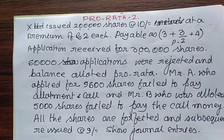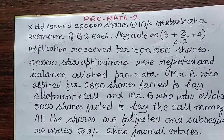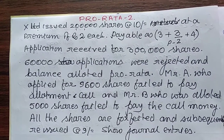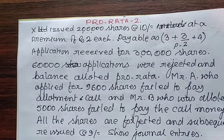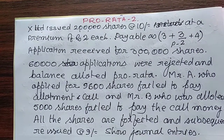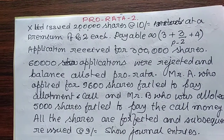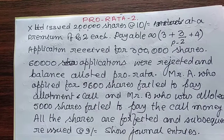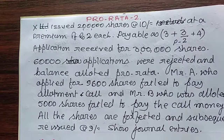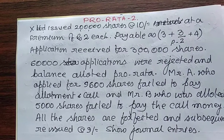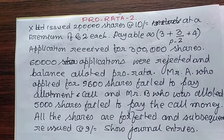The allotment is done pro-rata. The ratio is 2,40,000 to 2,00,000, that means 6 is to 5. Mr. A applied for 9,600 shares and has been allotted in the ratio 6:5, which comes to 8,000 shares. It is given in disguise that 8,000 shares is the actual holding of Mr. A, who failed to pay the allotment money and call money.